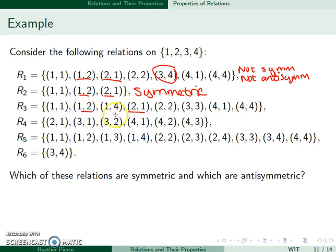1,2 flipped is 2,1. 1,4 flipped is 4,1. We can see 1,1 is 1,1. 2,2 gives me 2,2. 3,3, etc. So this one is also symmetric.